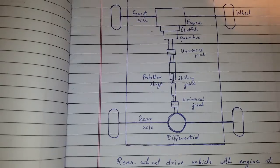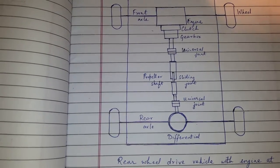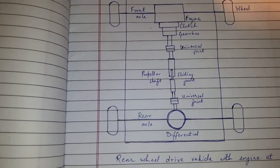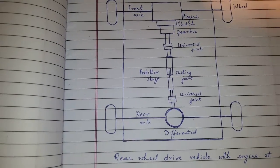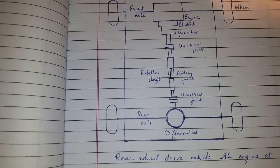The disadvantages: the length of transmission increases, propeller shaft is required. If the vehicle is stuck in mud or snow, it is harder to drive away compared to the front wheel drive car.